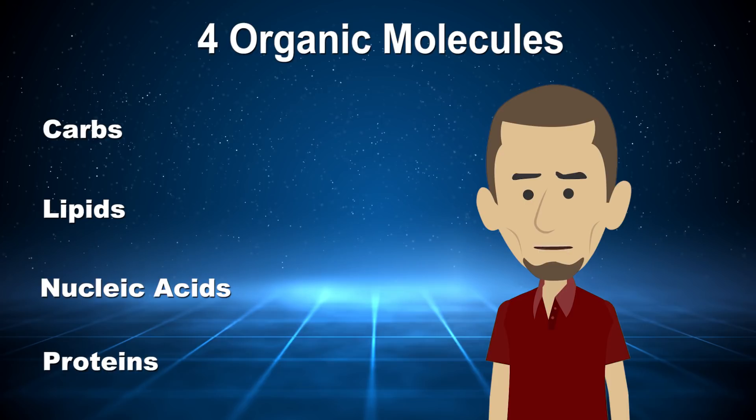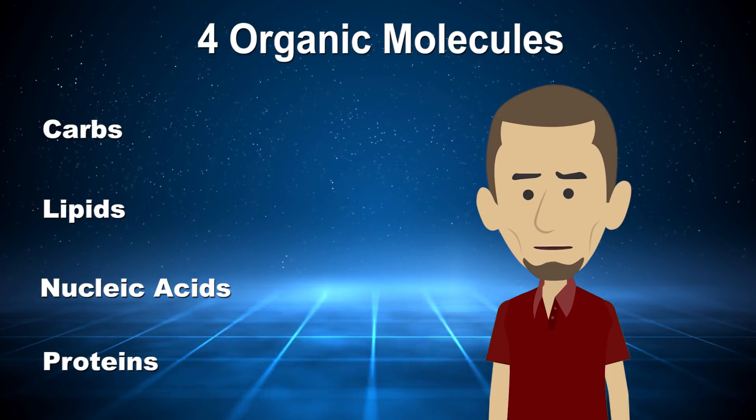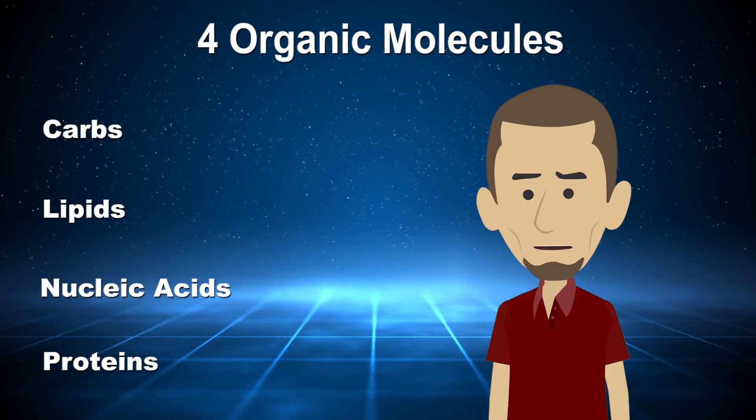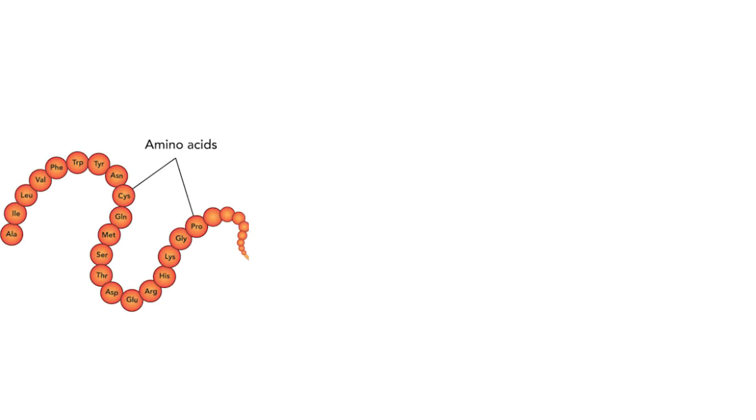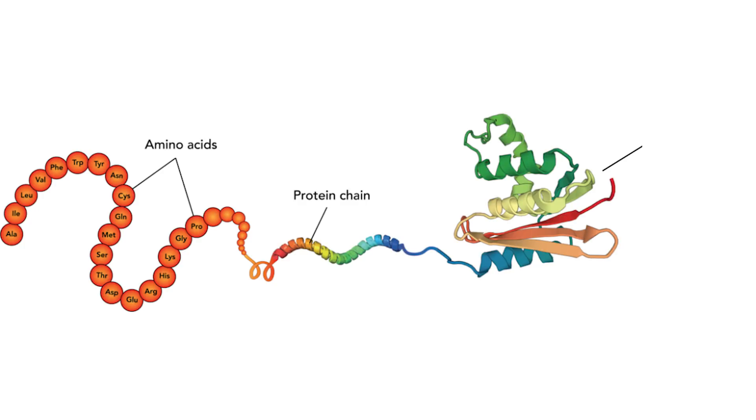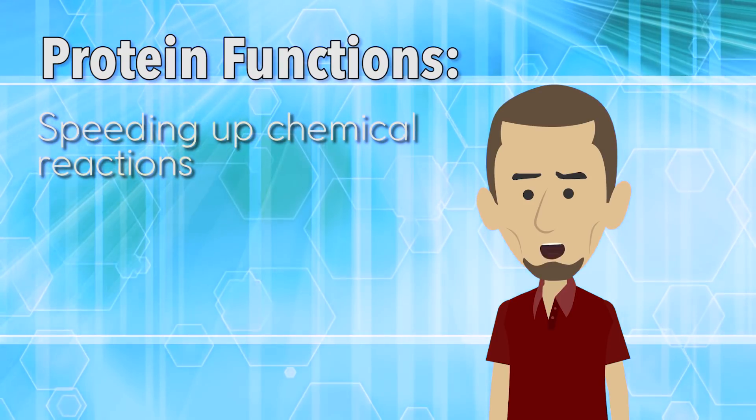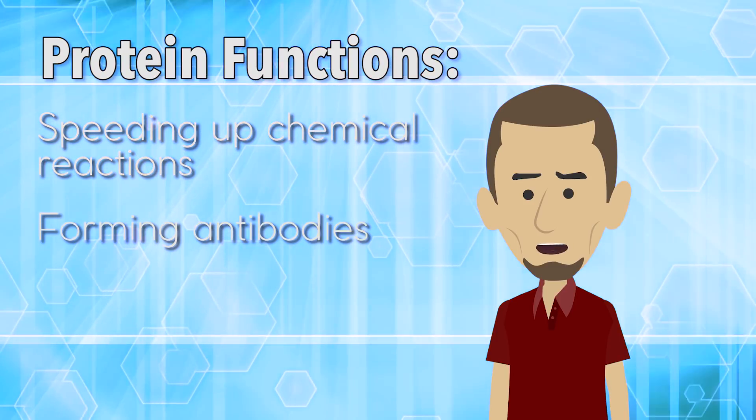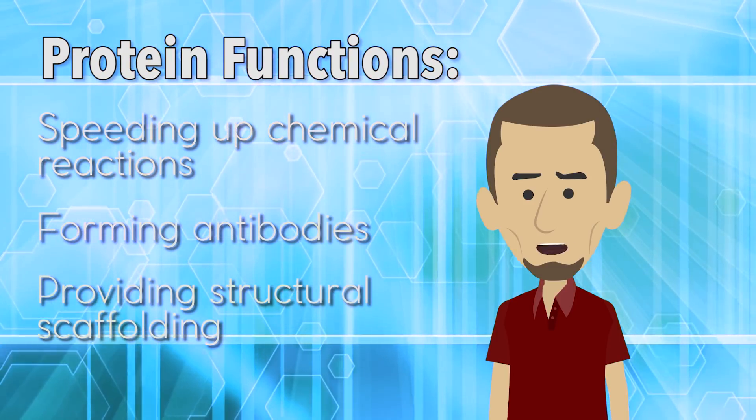Once you have these four building blocks for life, they can work together, form various structures, and play vital roles for every living organism. For example, when a polypeptide chain gets long enough, these chains naturally fold into structures called proteins that carry out vital functions like speeding up chemical reactions, forming antibodies, and providing structural scaffolding.